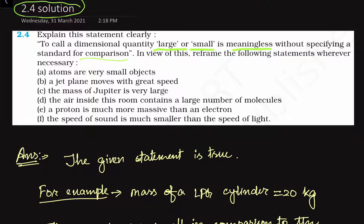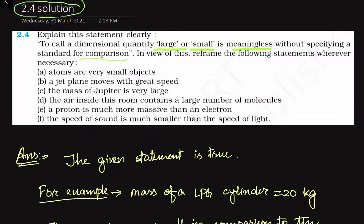Let me explain with some examples. Suppose whenever we say 1 kg, this quantity looks like a small quantity. But in comparison to suppose 10 g, this magnitude looks bigger in value but the unit is smaller. That means a quantity may be large or small only when we compare it with some standard quantity.